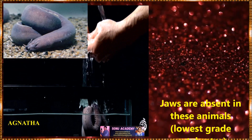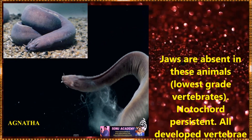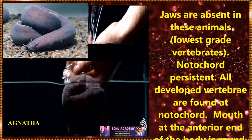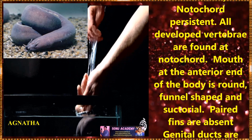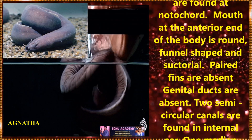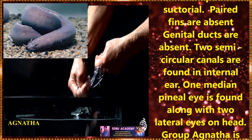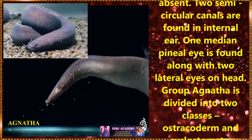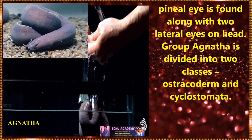Now let us discuss about Ajanatha. In these animals, jaws are absent and notochord is persistent. All well-developed vertebrae are found at the notochord. Mouth at the anterior end of the body is round, funnel-shaped and suctorial. Paired fins are absent. Genital ducts are also absent in this group. Two semicircular canals are found in the internal ear. One median pineal eye is found along with two lateral eyes on the head.